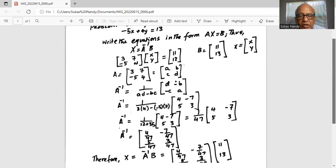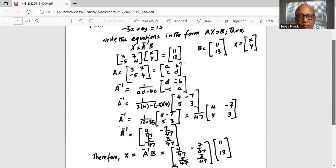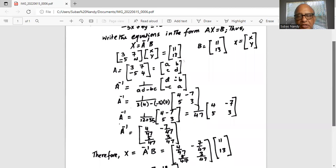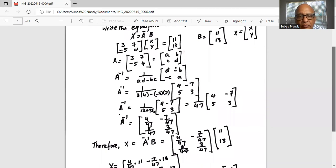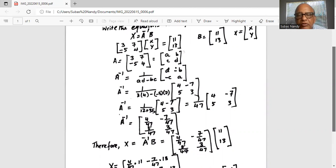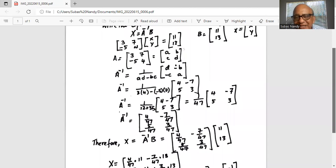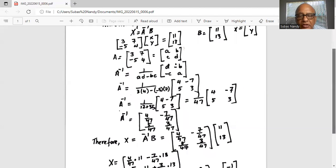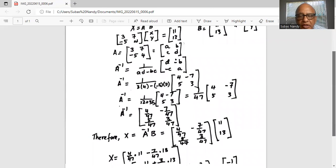So A inverse equals 1 over 47 times the matrix 4, minus 7, 5, 3. We apply the rules of multiplication and distribute 1 over 47 to each component. We multiply each number by 1 over 47.